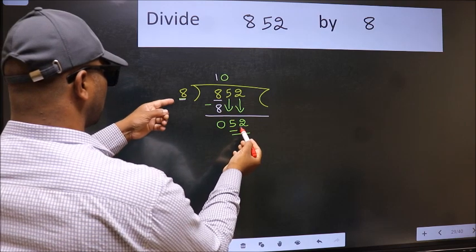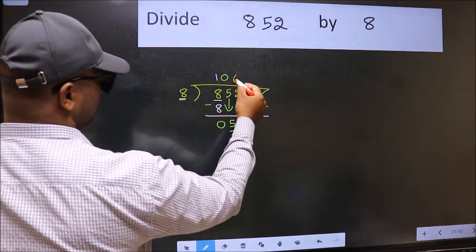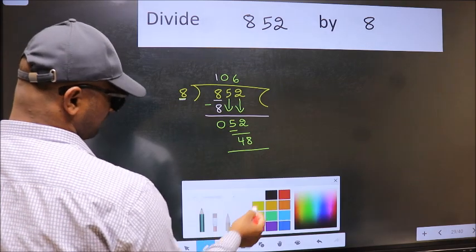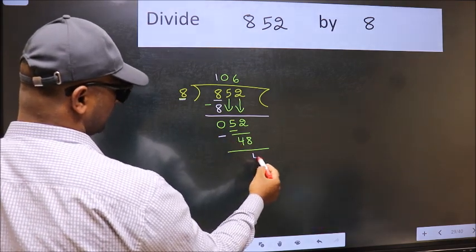A number close to 52 in 8 table is 8 sixes 48. Now we should subtract. We get 4.